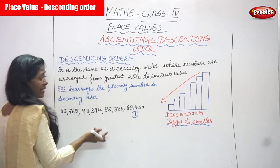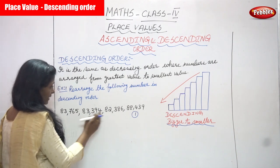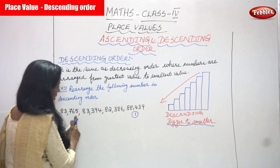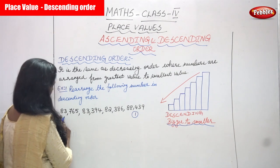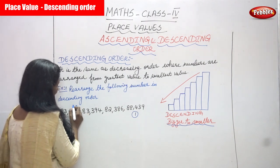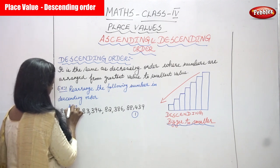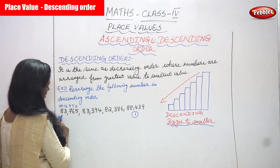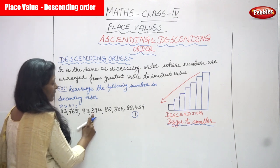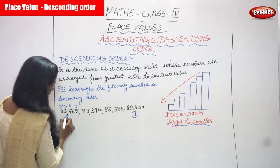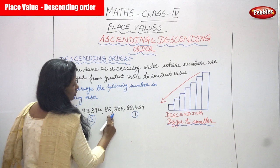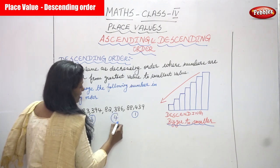The next numbers are both 83,000. Comparing 83,765 and 83,394 — the 10,000 place and 1,000 place are both 83 for these two numbers. So we compare the 100s place: 700 versus 300. So 83,765 is the next bigger number and gets second priority. Then 83,394 gets third priority. And finally 82,386 is the smallest number in this group.